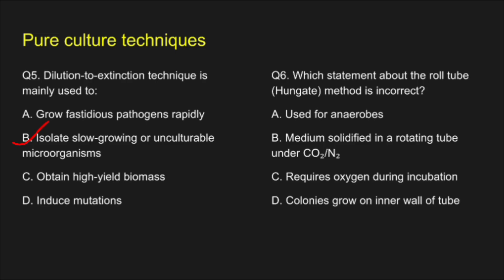Question 6. Which statement about the roll tube, i.e. Hungate method, is incorrect? A. Used for anaerobes, B. Medium solidified in a rotating tube under carbon dioxide and nitrogen, C. Requires oxygen during incubation, D. Colonies grow on inner wall of tube. The correct answer is option C: Requires oxygen during incubation.